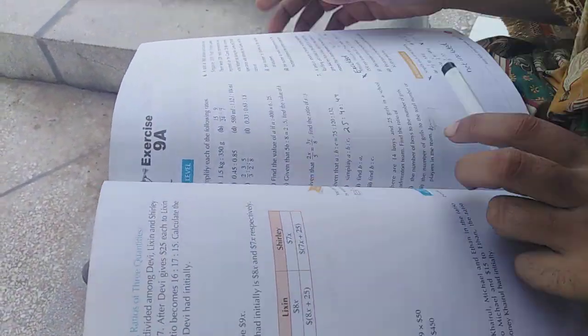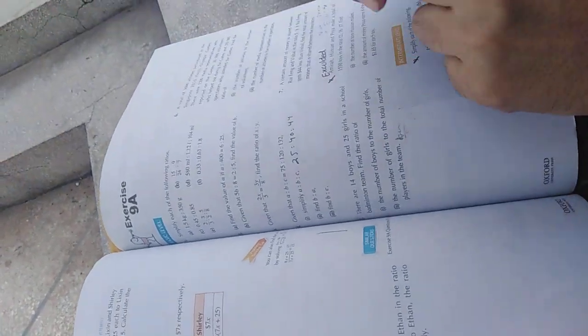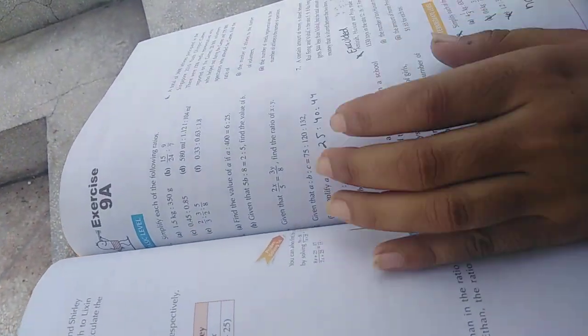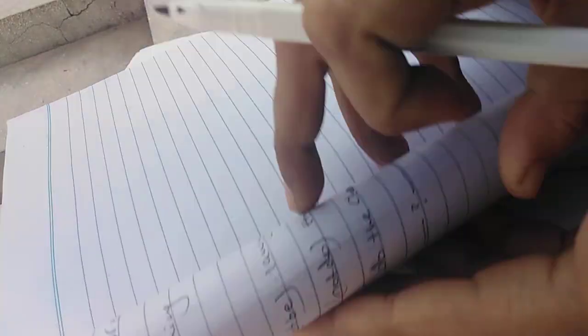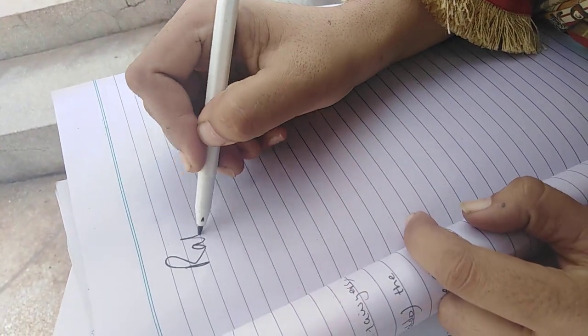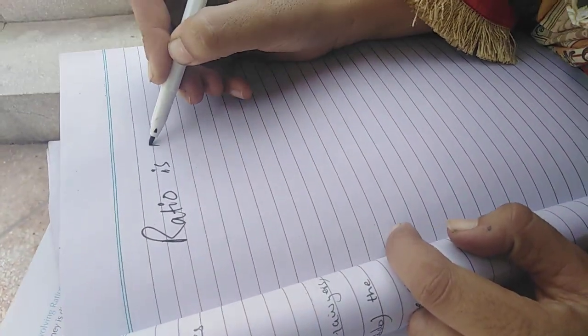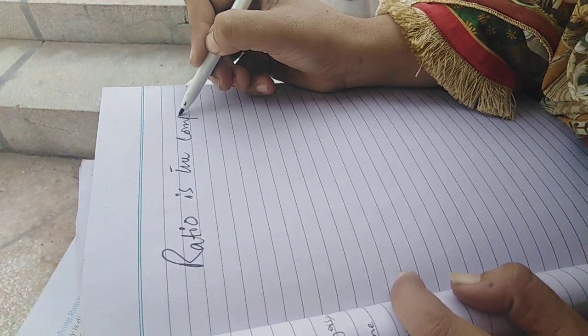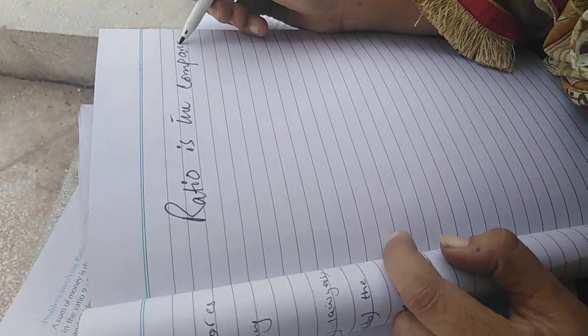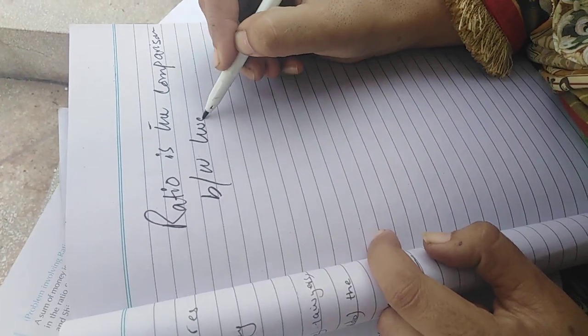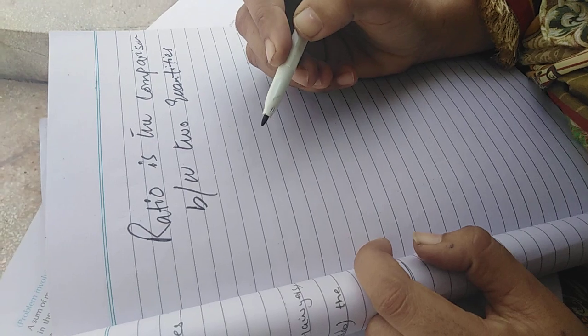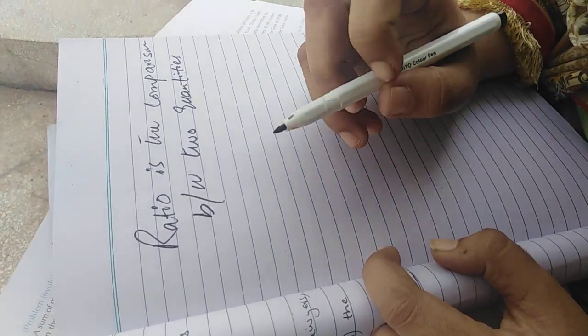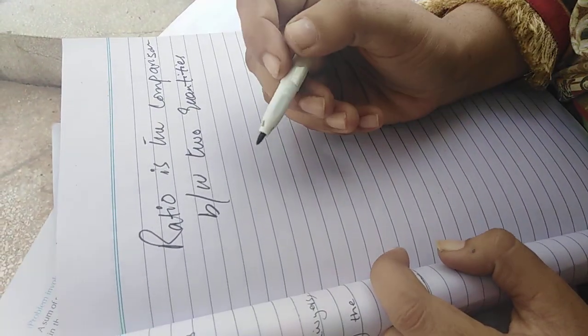Today I will explain question number one of exercise 9A: simplify each of the following ratios. First, I will explain what is ratio. Basically, ratio is the comparison between two quantities. When we want to compare two quantities, we use ratio.